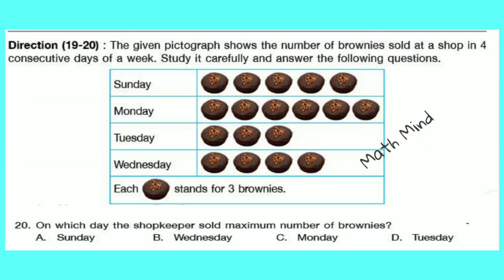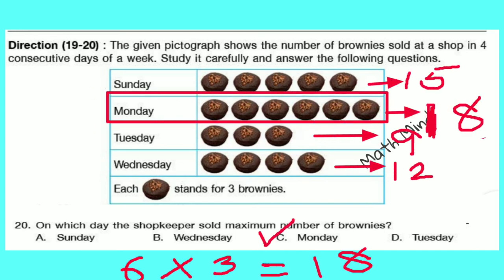Question number 20: On which day did the shopkeeper sell the maximum number of brownies? The correct answer is C — Monday, when 6 × 3 = 18 brownies were sold. This is the maximum.